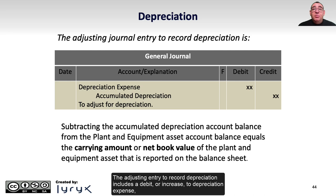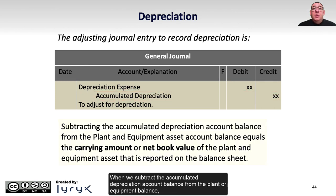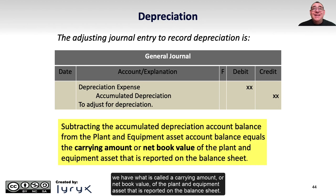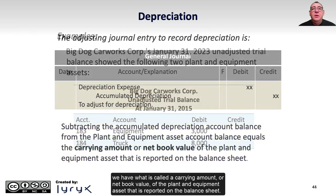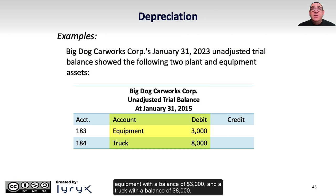The adjusting entry to record depreciation includes a debit or increase to depreciation expense and a credit or increase to the accumulated depreciation contra-account. When we subtract accumulated depreciation from the plant or equipment balance, we get the carrying amount or net book value reported on the balance sheet. For Big Dog Car Works at January 31st, 2023, the unadjusted trial balance shows two plant and equipment assets: equipment with a balance of $3,000 and a truck with a balance of $8,000.